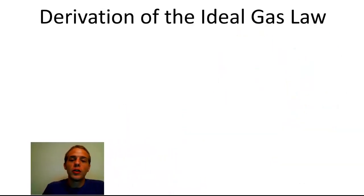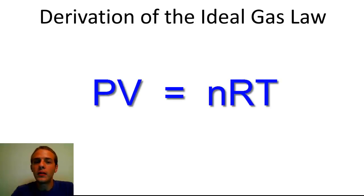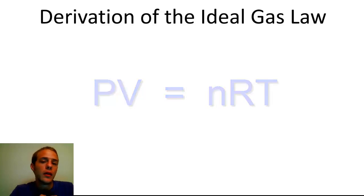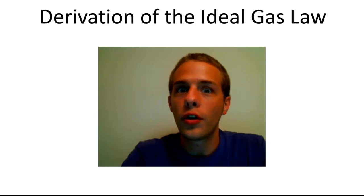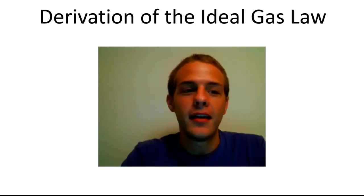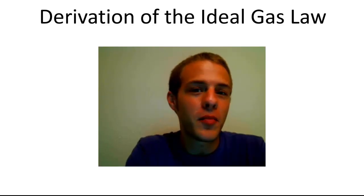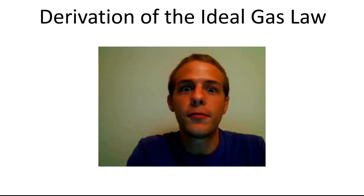So far we've talked about how the kinetic molecular theory accounts for Boyle's Law, Charles' Law, Avogadro's Law, and Dalton's Law. Now we are going to use the principles of the kinetic molecular theory to derive the ideal gas law — PV = nRT. I'll warn you, it's going to get pretty lengthy and pretty mathematical. So if you don't like math, I'd recommend you either brace yourself or just stop the video right now. But if you're not afraid of the math, let's dive right into it.